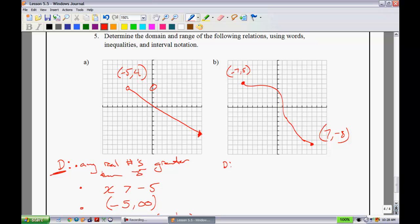Domain. Well, in terms of words, we would say that we can have anything in between negative 7 and 7 here. So the real numbers between